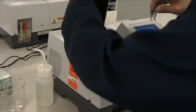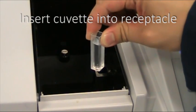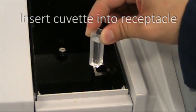Lift the lid and insert the cuvette. Note that the cuvette only has two clear sides. Insert the cuvette into the receptacle so that the clear sides face left and right.